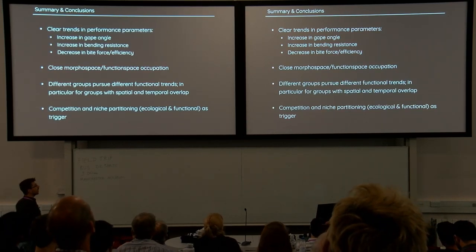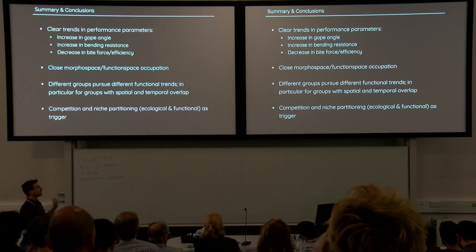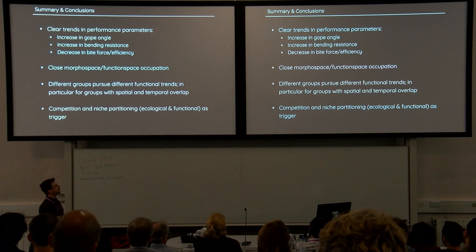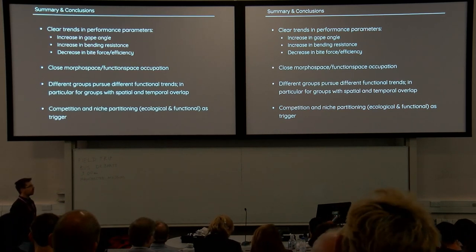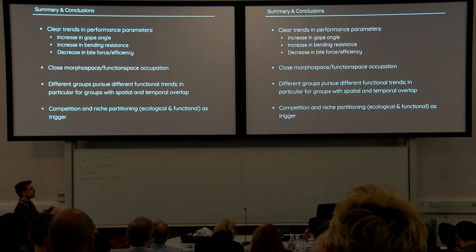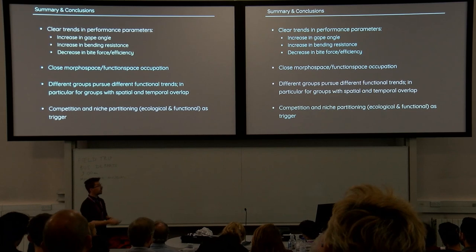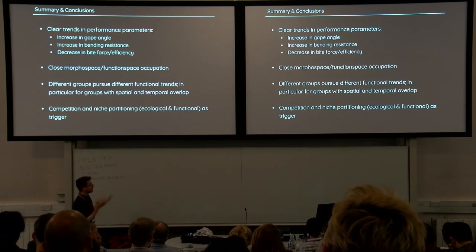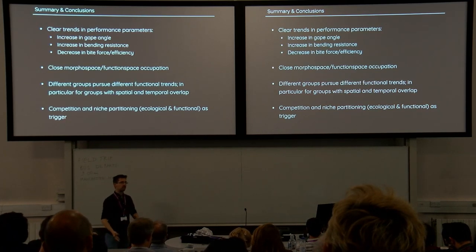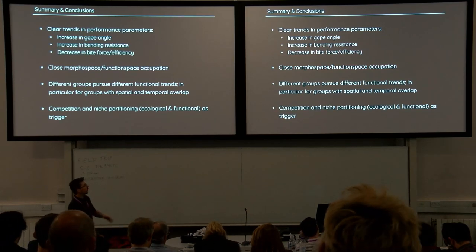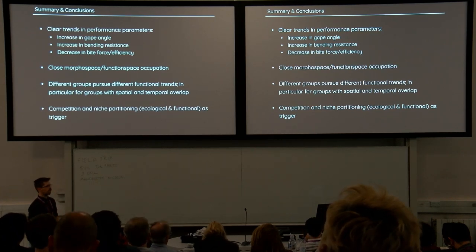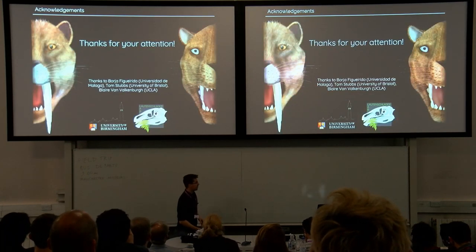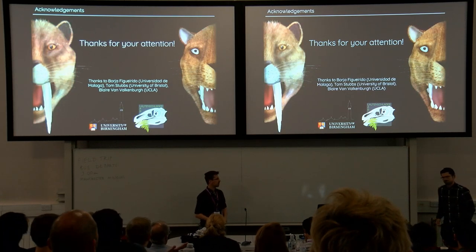To sum up: we have clear indication of trends in these three performance criteria — an increase in gape angle, an increase in bending resistance, and a decrease in bite efficiency. However, looking at all three parameters in combination, we see no clear separation; they're all superimposed onto each other. What we can see, and want to explore further, is that the three saber-toothed cat groups are showing different trends, likely due to possible niche partitioning or different ecologies triggered by their spatial and temporal overlap. Thank you all for your attention, and I'm happy to answer questions.